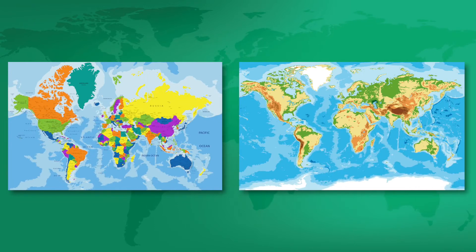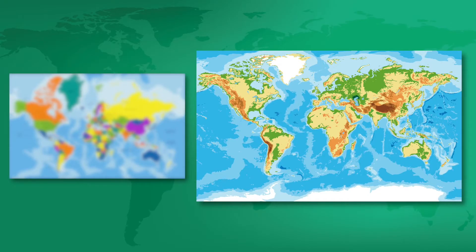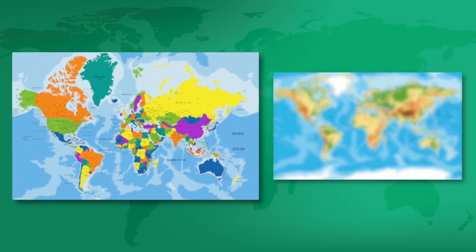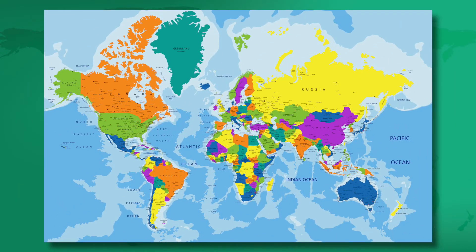Do you think it's necessary for my neighbor and I to establish a border? What's the purpose of borders anyway? Well, check out these maps. In our previous unit we studied a physical map, which shows Earth's natural environment. This map is different — it shows us the borders that divide our world into states. It's a political map.